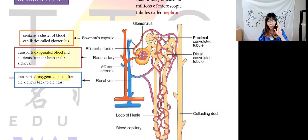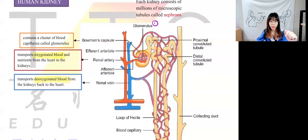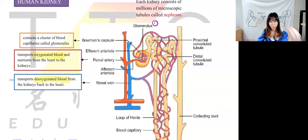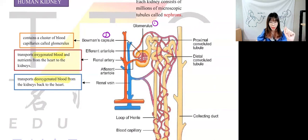Now let's look at the labeled parts — you need to know numbers one through six. Number one: we start with the glomerulus. The glomerulus is a bunch of capillaries, a bunch of blood vessels. These blood vessels are enclosed in a capsule called the Bowman's capsule — remember to capitalize the B.